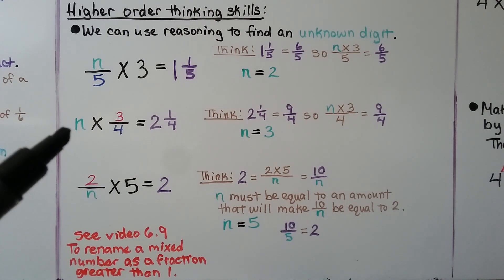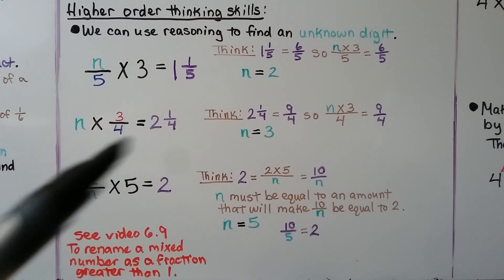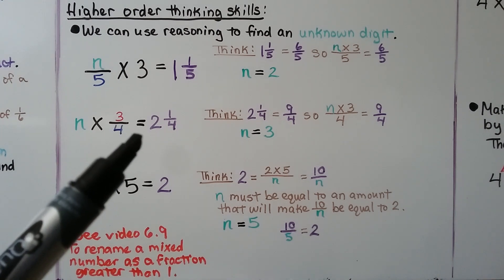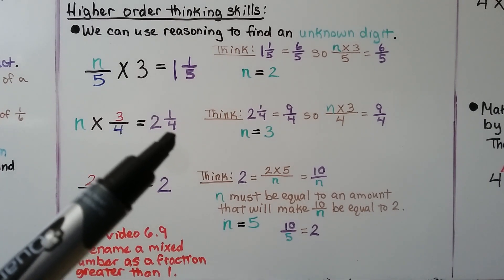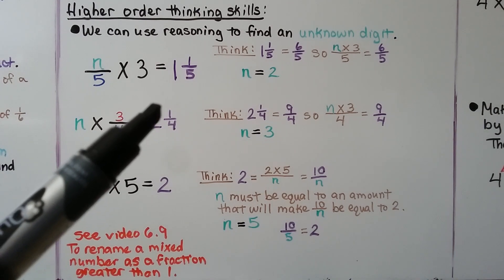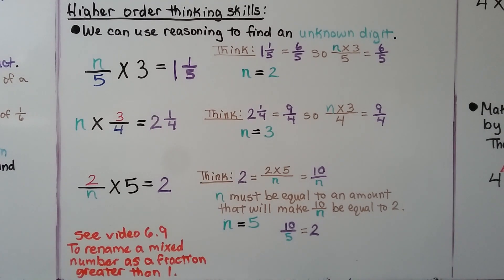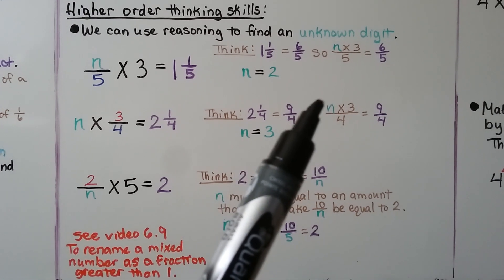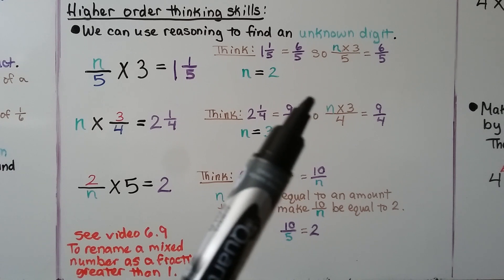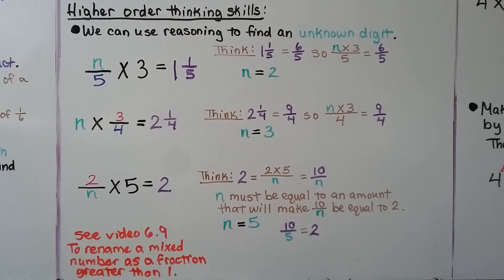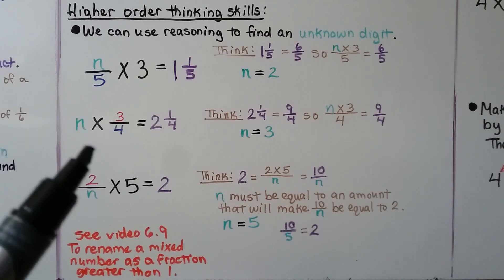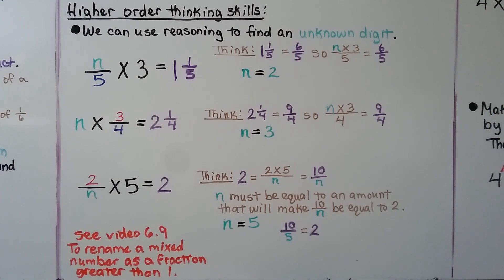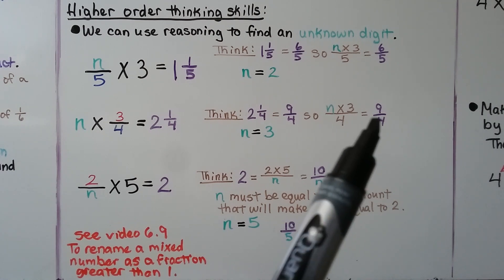For this one, we have some whole number n times 3 fourths is equal to 2 and 1 fourth. We take 2 and 1 fourth and turn it into a fraction greater than 1: 2 times 4 is 8, plus the numerator 1 is 9 — it's equal to 9 fourths. That means n times 3 is equal to 9. Well, 3 times 3 is equal to 9, so n must equal 3. 3 times 3 fourths is equal to 2 and 1 fourth, which is 9 fourths.